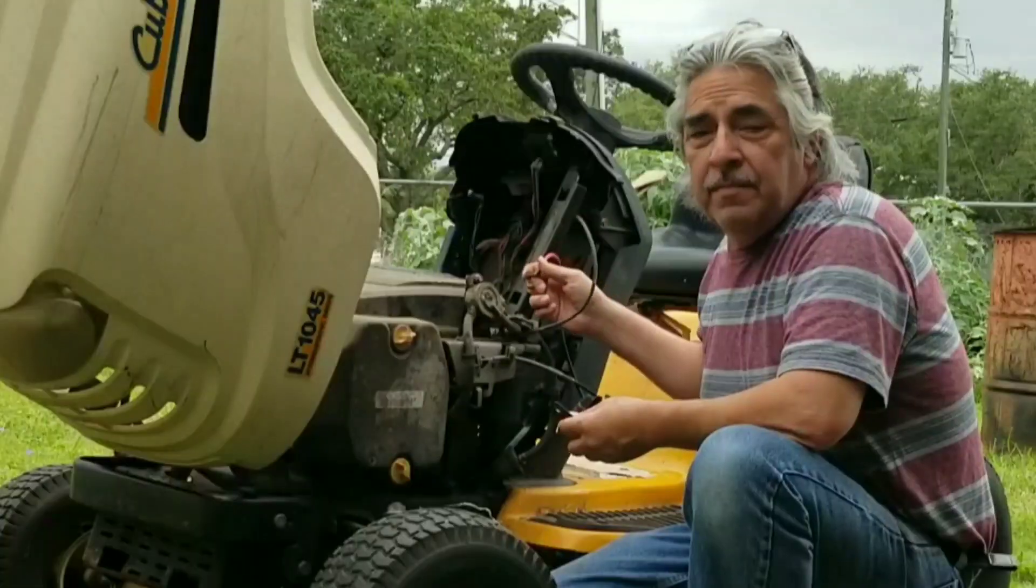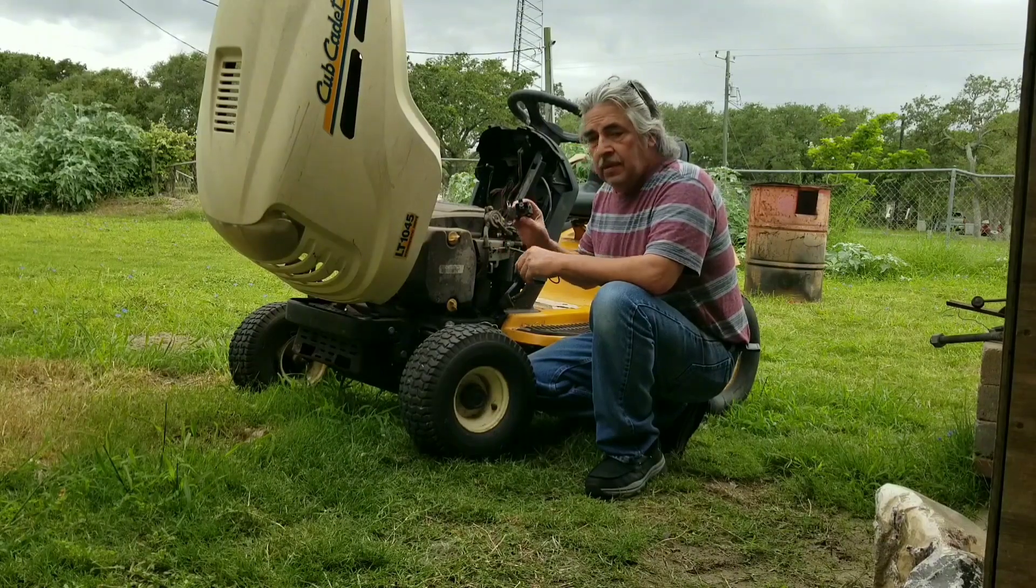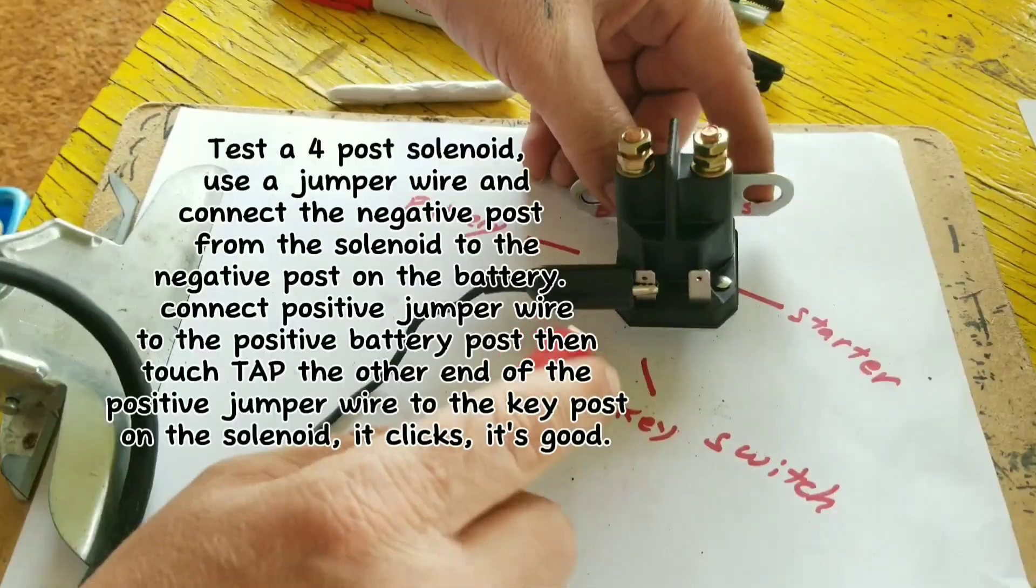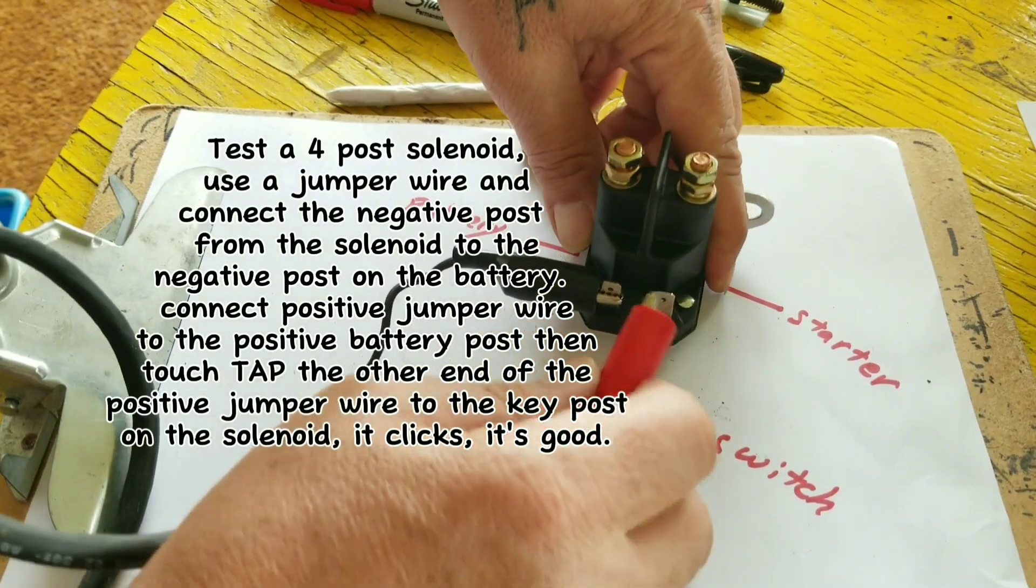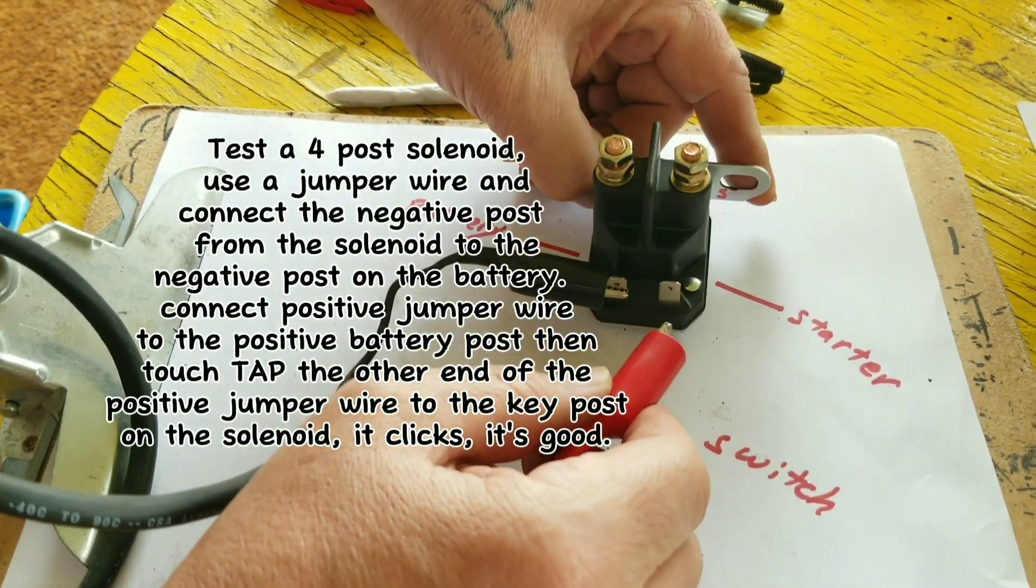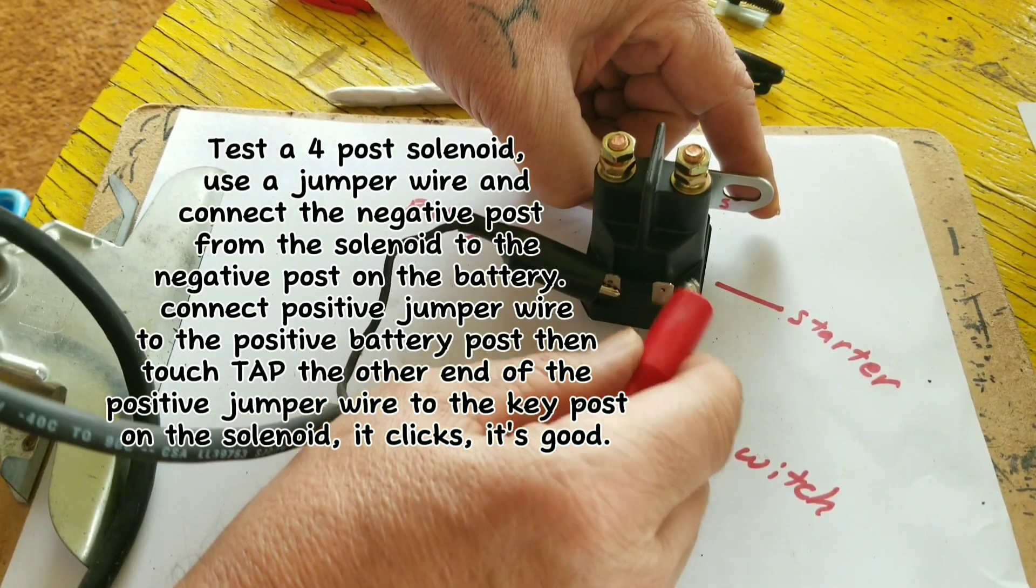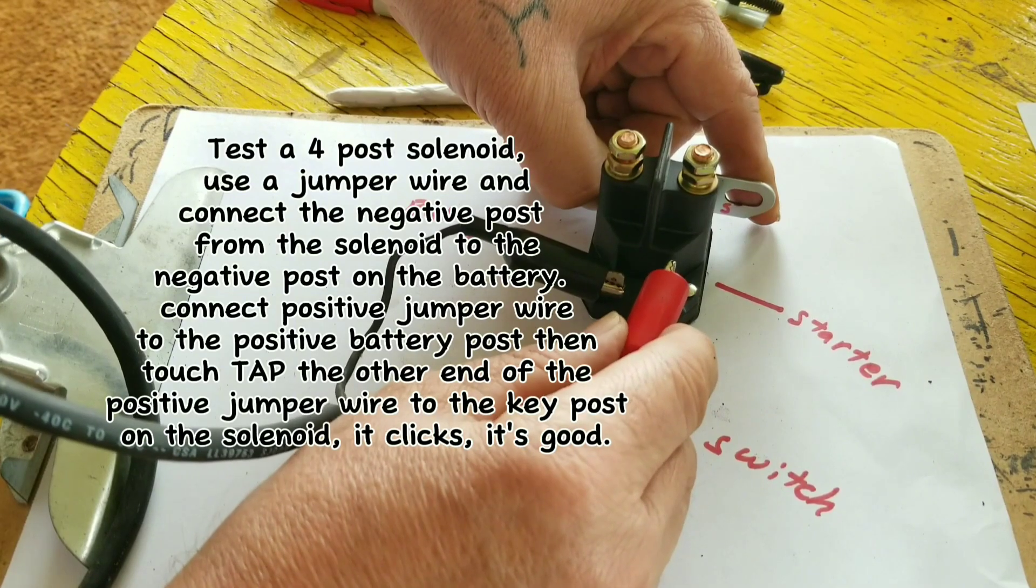My mower stopped working and kept blowing fuses over and over. I finally found out the solenoid was bad. The ground's always plugged in. With the key off it's not doing nothing. Now you're gonna turn the key on to turn the mower on. When you turn the key, you activate this switch. You hear that?